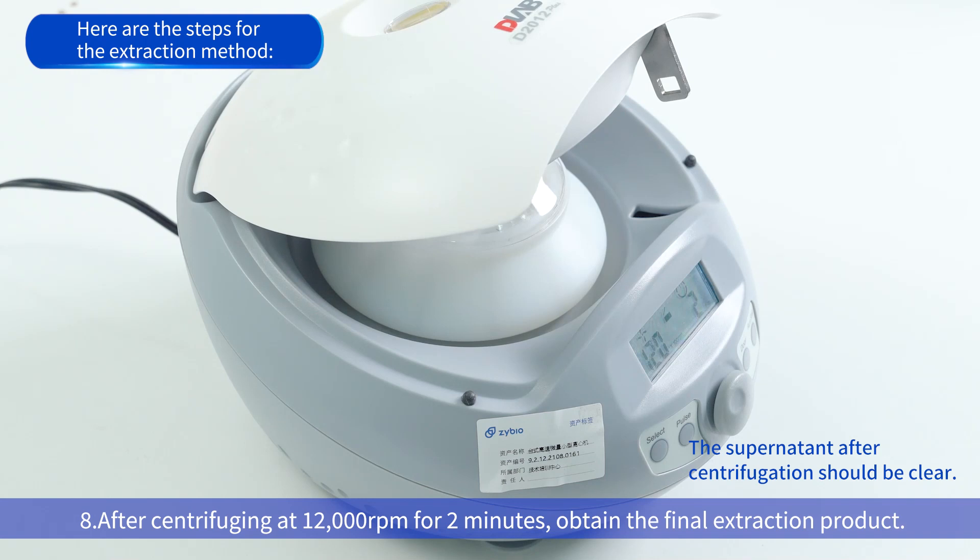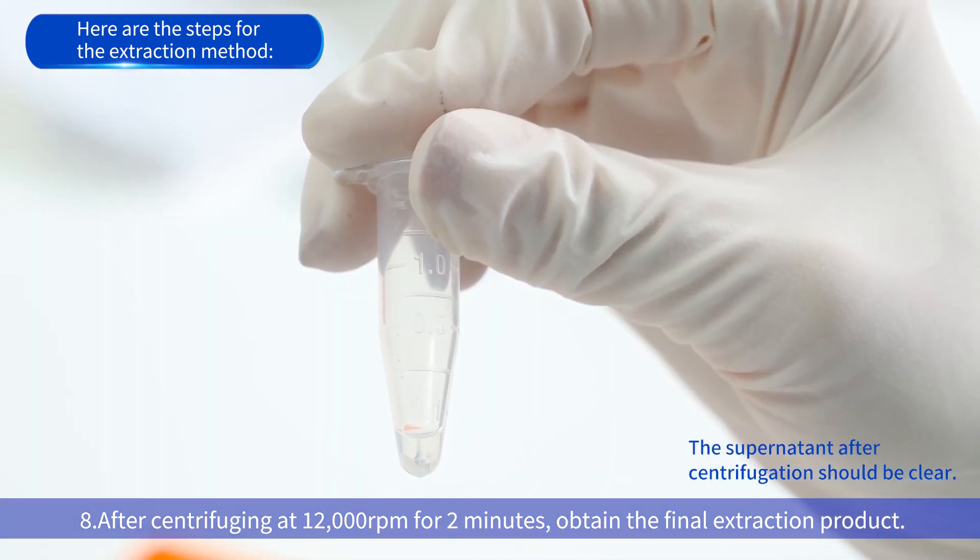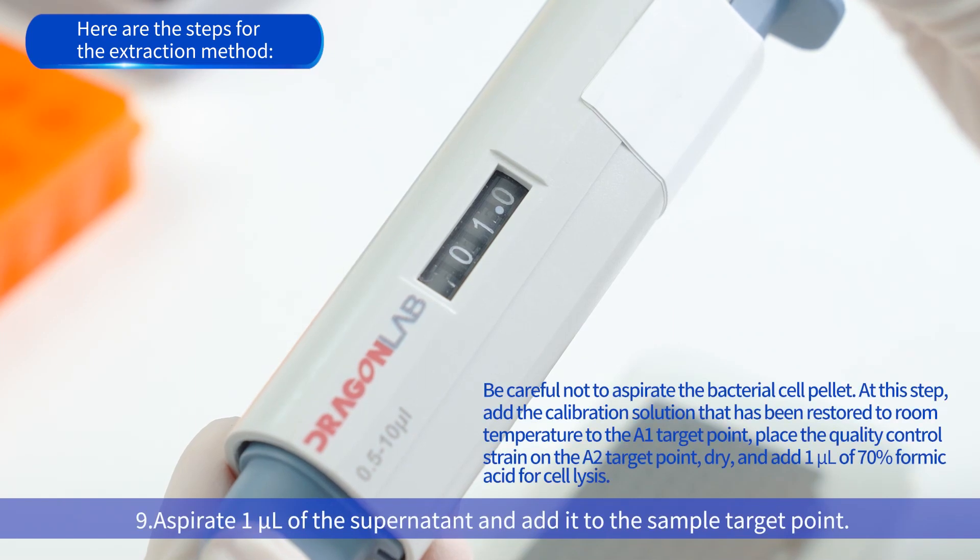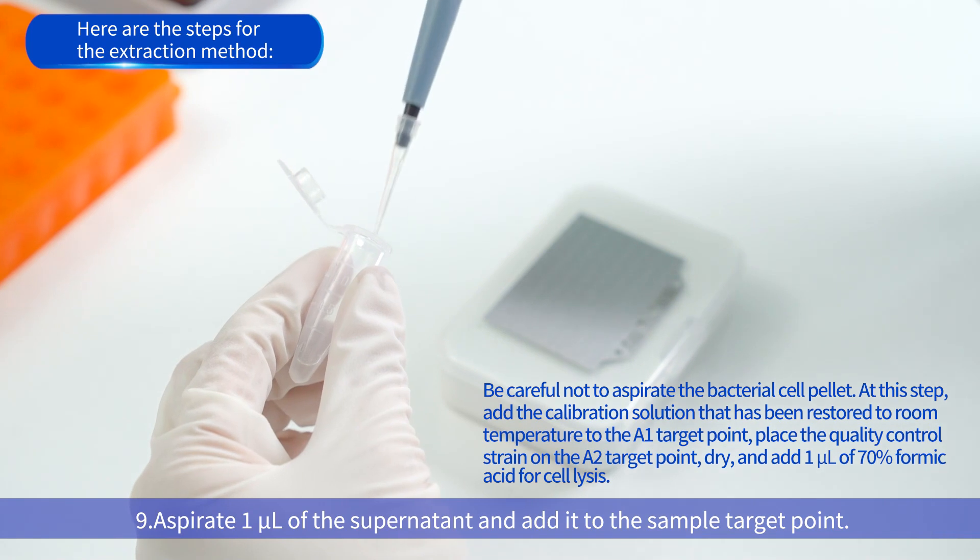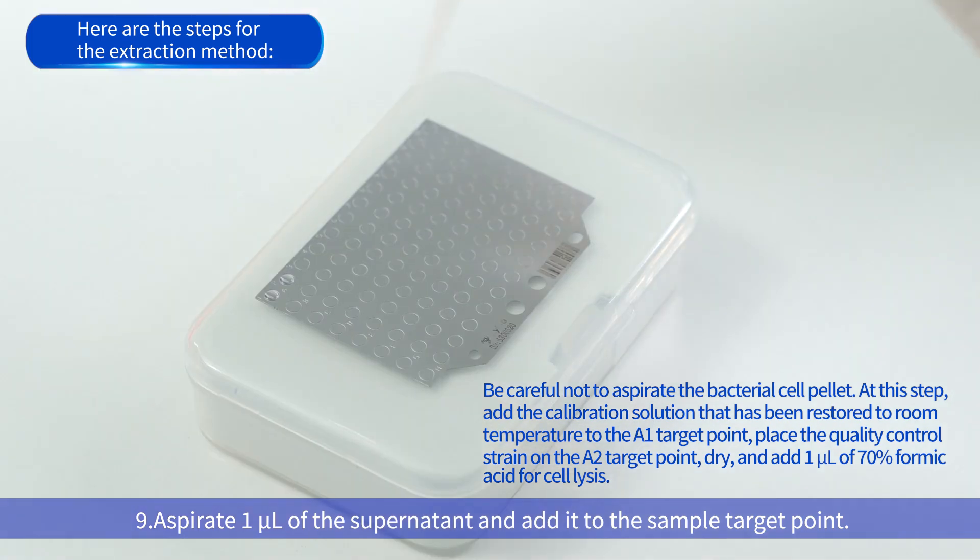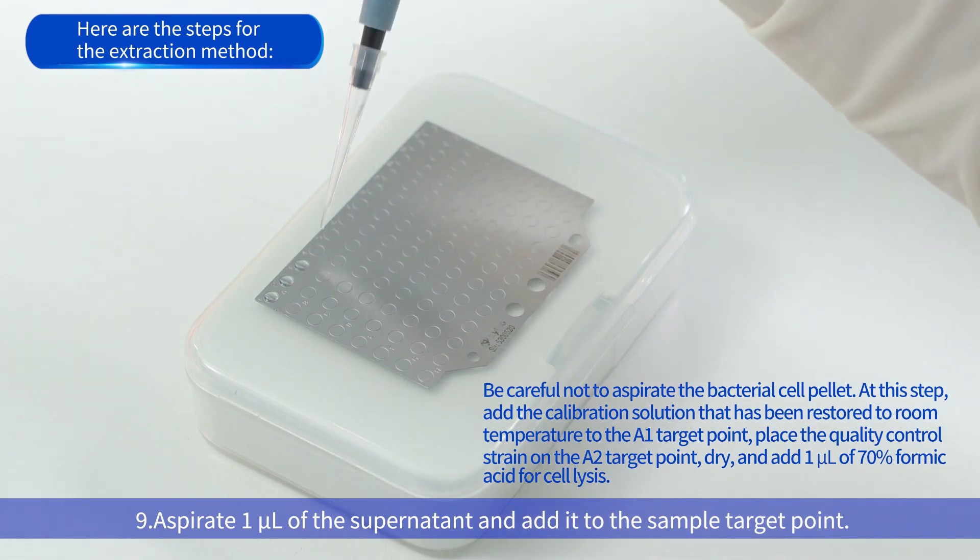Ninth, aspirate 1 microliter of the supernatant and add it to the sample target point. Be careful not to aspirate the bacterial cell pellet. In this step, add the calibration solution that has been restored to room temperature to the A1 target point. Place the quality control strain on the A2 target point.